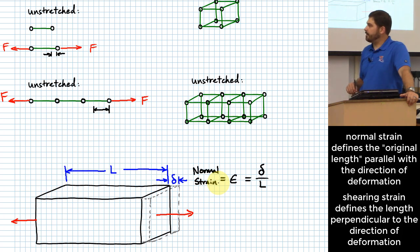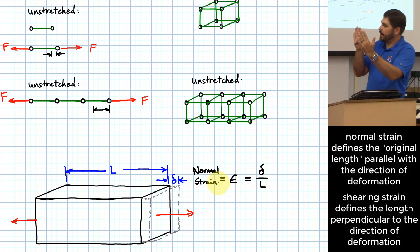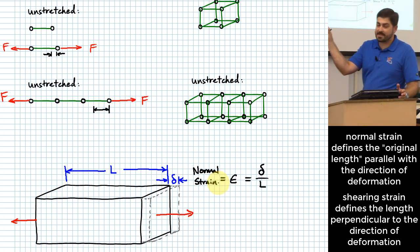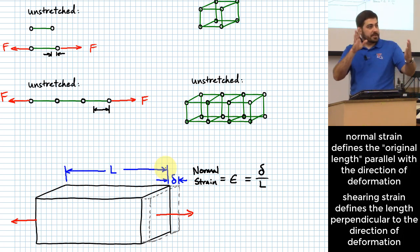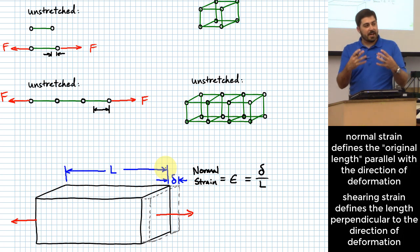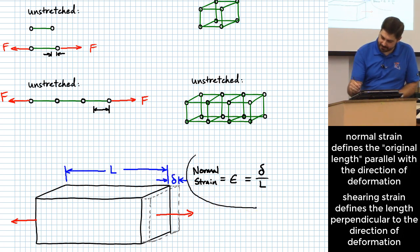In normal strain, the direction the part is extending is parallel with the direction of the applied force. Also, the direction of the original length L is along that same direction - parallel with both the applied force and the direction of extension. You might get the idea I'm setting something up - that maybe not all strains are like that, that there might be other kinds of strain besides normal strain.